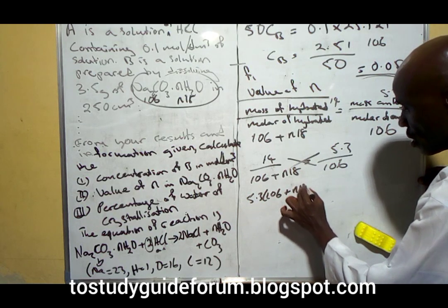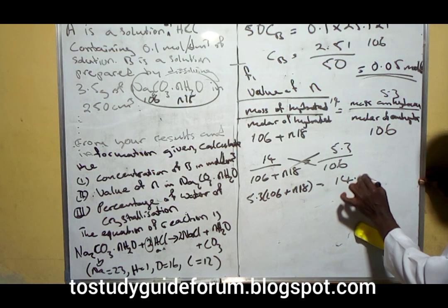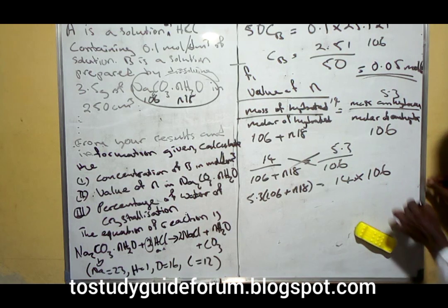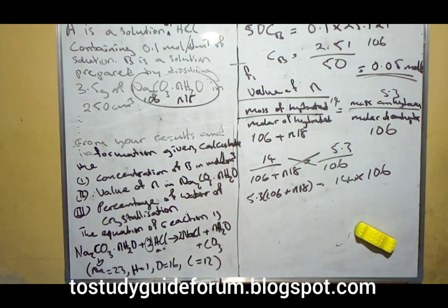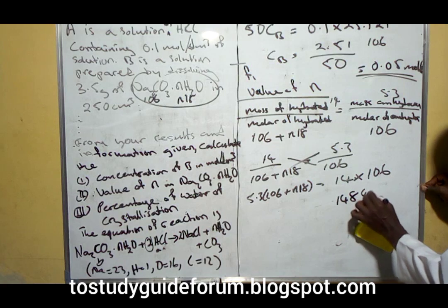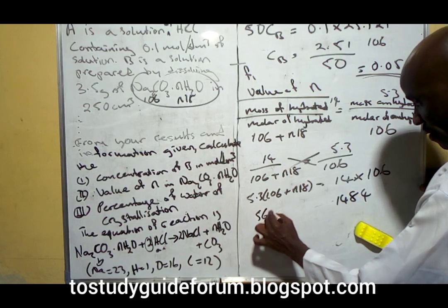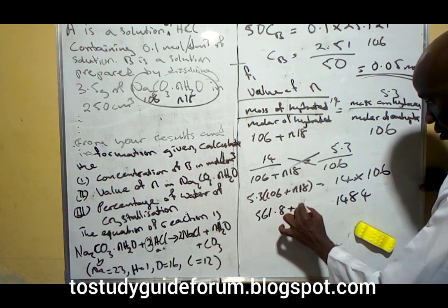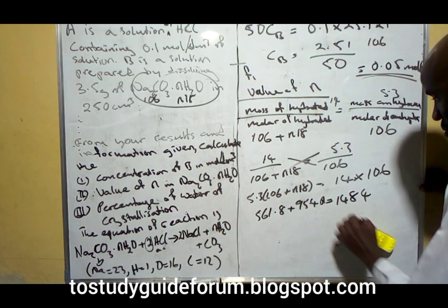Crossing over, we have 5.3 times (106 plus n18) equals 14 times 106. 14 times 106, what we have there should be 1484.